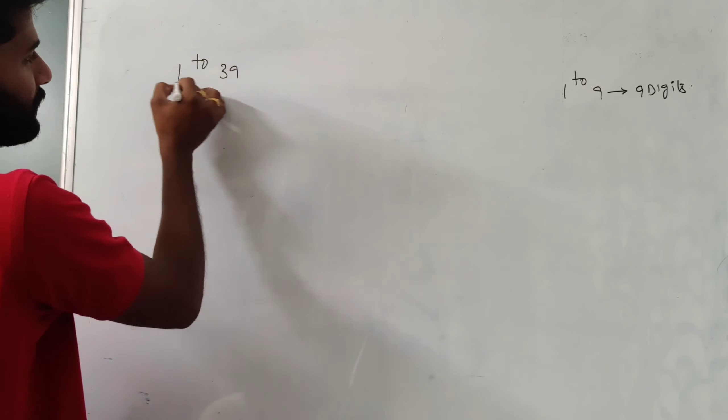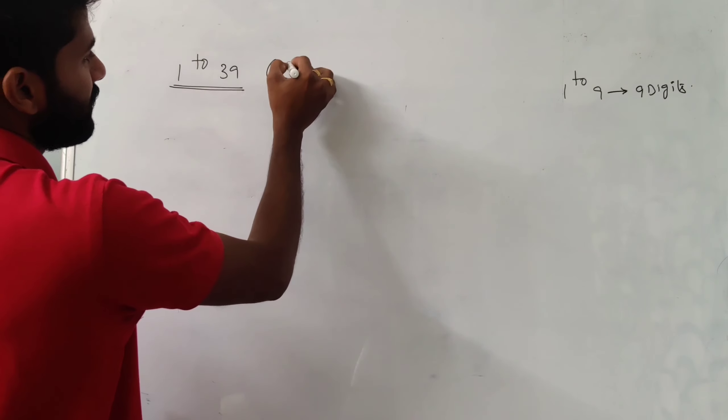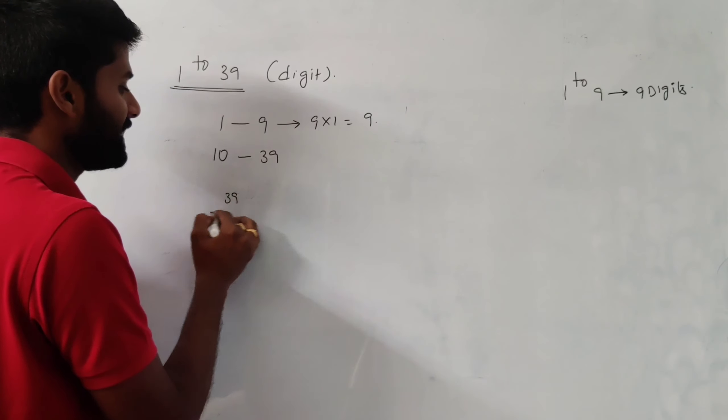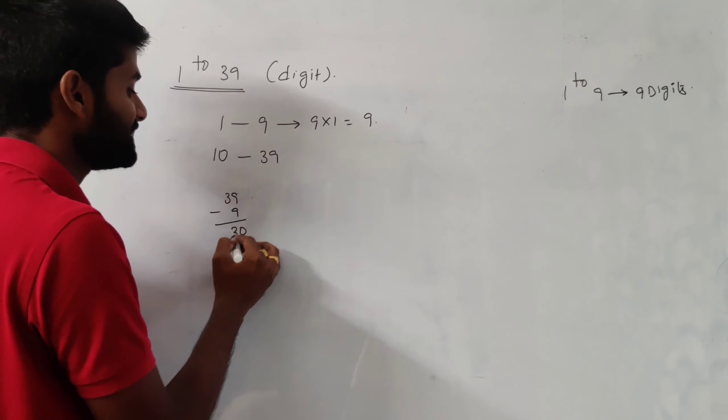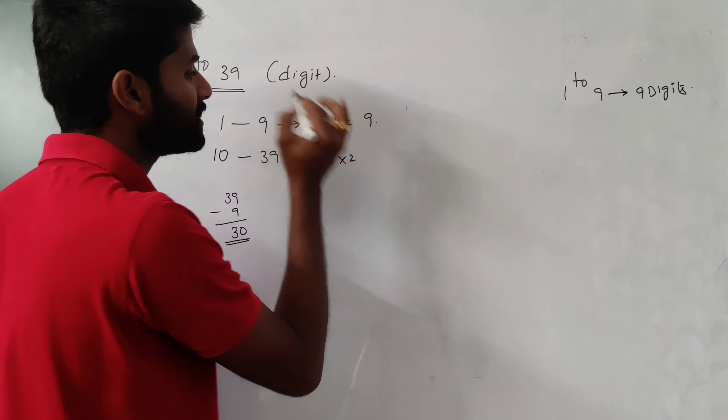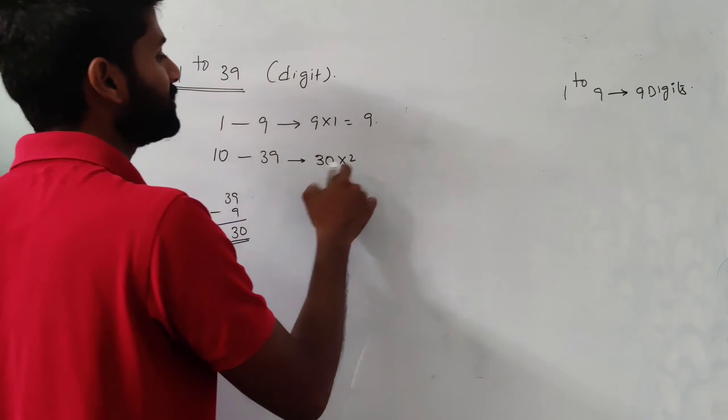Let's see the next topic in number system: counting digits. We know numbers start from zero: 0, 1, 2, 3, 4, 5, 6, 7, 8, 9. Out of these, the total number of digits we use are 10 digits. From 1 to 9 we have nine numbers, and to form any of these numbers we require one digit — that's why we call them single digit numbers. We have nine numbers using one digit each.